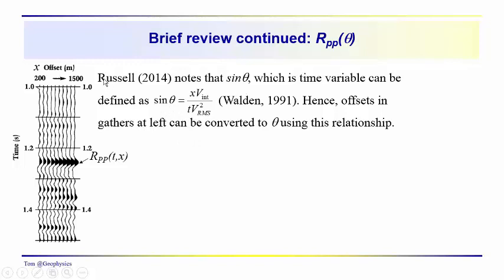We need to make the distinction between offset and theta. When we collect data in the field and even after processing, we have amplitude variations as a function of offset. We see increasing amplitude as we go from near offsets to far offsets, and this amplitude — r sub PP — is a function of travel time and offset distance x. Russell notes in his paper that sine of theta can be represented as x times the interval velocity over the two-way travel time times the RMS velocity squared.